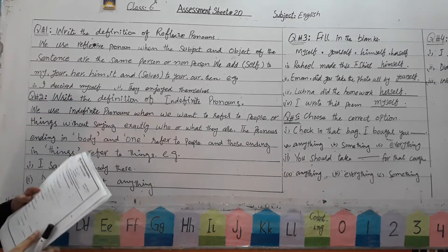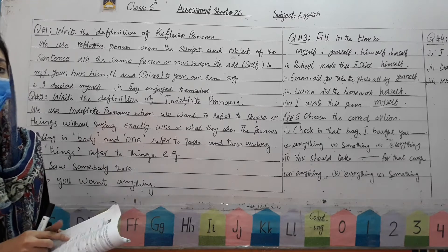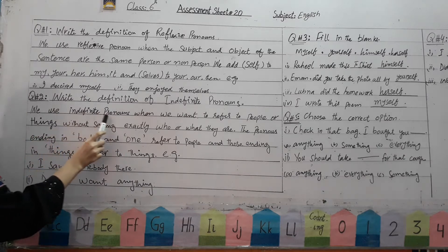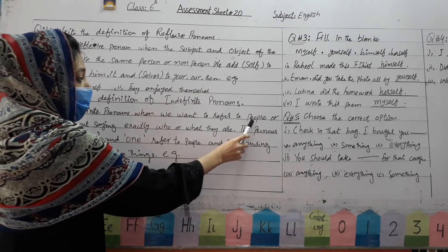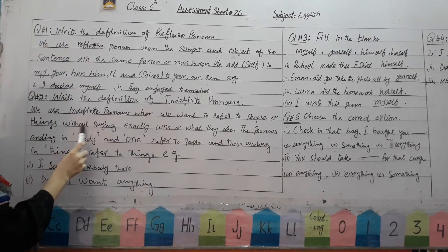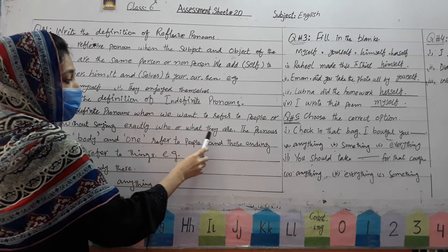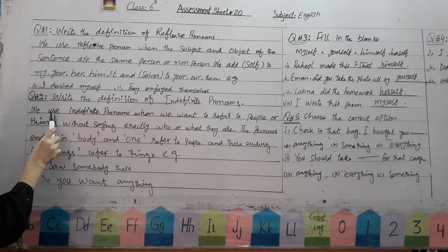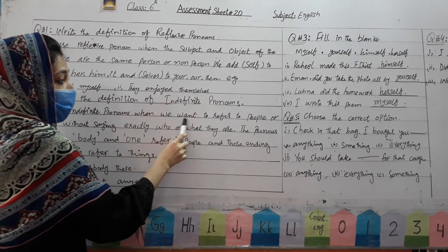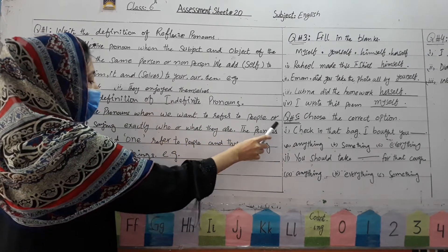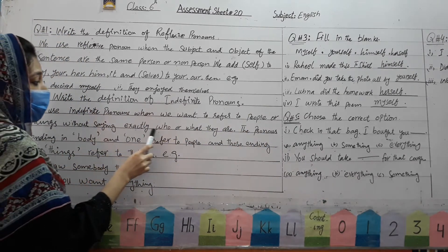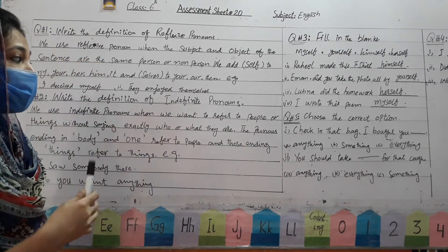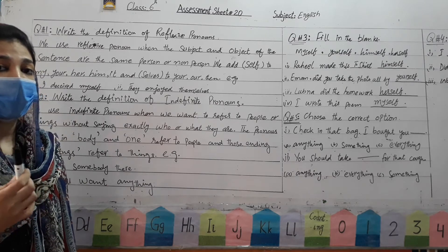The second question is: write the definition of indefinite pronoun. What is an indefinite pronoun? We use indefinite pronouns when we want to refer to people or things without saying exactly who or what they are. We cannot identify or exactly point out one specific person or thing.